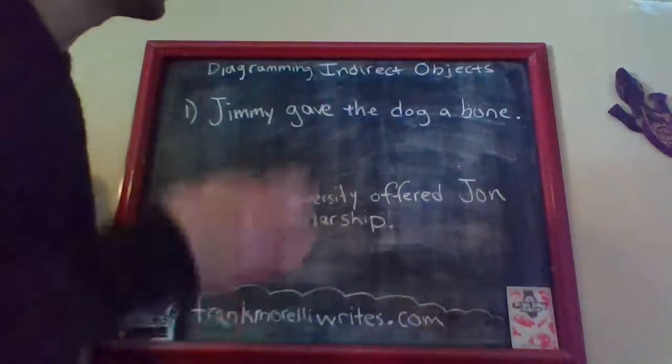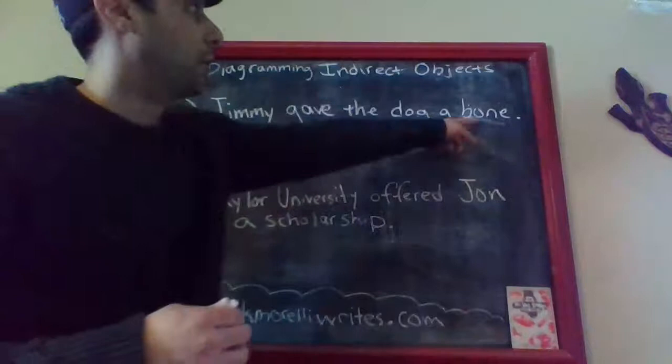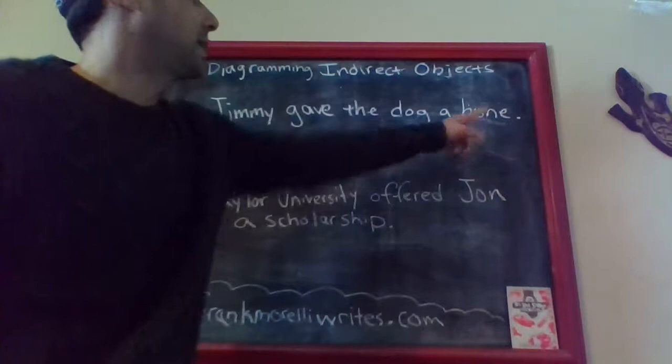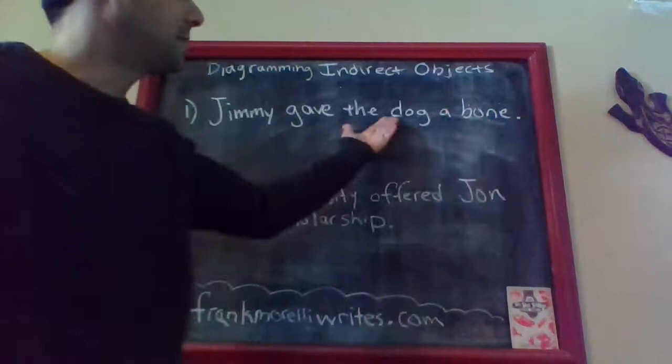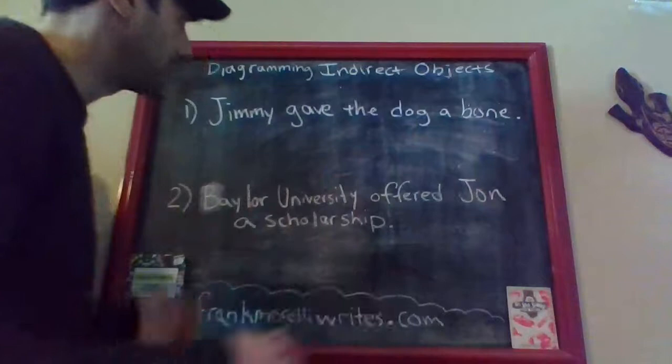You can use a trick: ask 'Jimmy gave what?' — the first answer is your direct object, which is 'bone.' Then continue asking: 'Jimmy gave the bone to whom or what?' — the answer is 'the dog.' So 'bone' is your direct object and 'dog' is your indirect object.